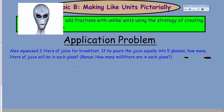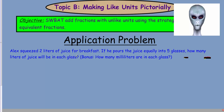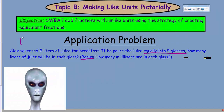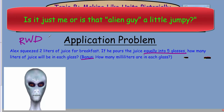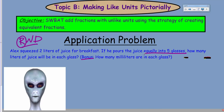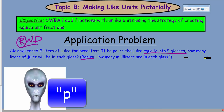Here's the application problem: Alex squeezed two liters of juice for breakfast. If he pours the juice equally into five glasses, how many liters of juice will be in each glass? We're going to use something called the RWD method. R stands for Read, W stands for Write, and D stands for Draw.